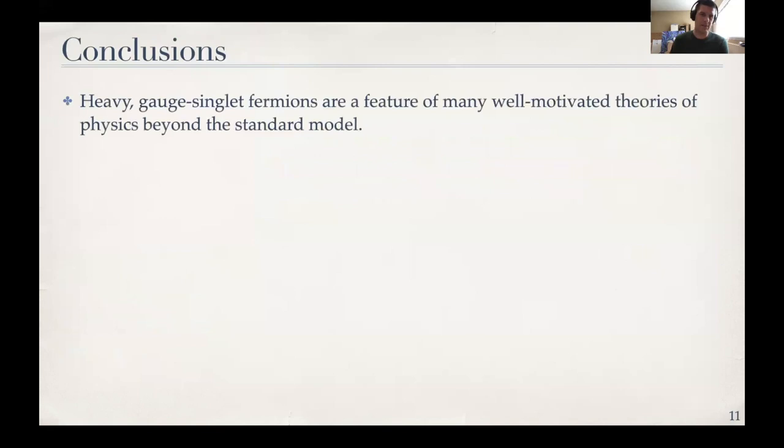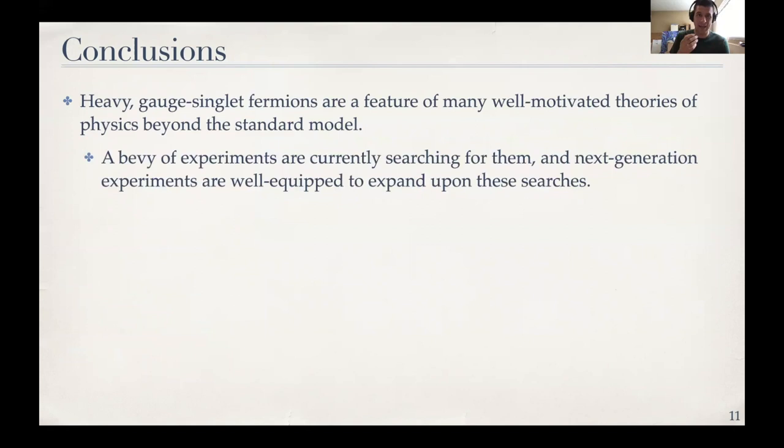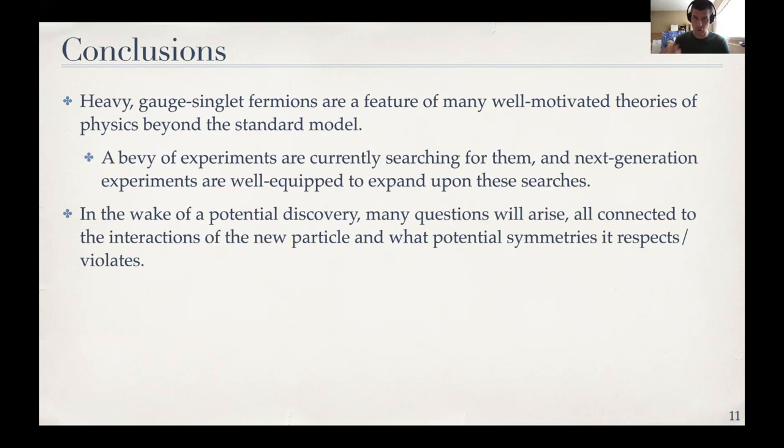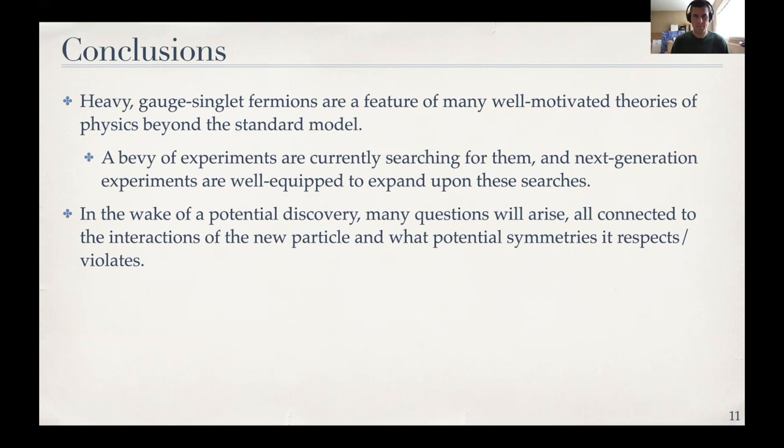So to wrap up, these heavy-gauge singlet fermions, heavy neutral leptons, sterile neutrinos, exist in many well-motivated beyond the standard model theories. Even theories like dark matter include heavy-gauge singlet fermions often. And so a bevy of experiments that are ongoing and that are currently in their planning stages have exquisite sensitivity to hopefully discover one of these fermions. If we're lucky enough that we do discover one of these, then I think it's prudent to ask the question now of what do we do after that and how we answer many of these interesting questions. For instance, whether it's a Dirac or Majorana fermion, what type of symmetries it obeys or violates, etc. And these purpose-built experiments can really do a lot of work to answer these questions. And one of the key experimental tools of answering the question of Dirac versus Majorana fermion is measuring the distribution of decays of these new particles. So I appreciate your attention. Thank you very much for watching my video, and I hope to answer as many of your questions as possible during the panel talk. Thank you.